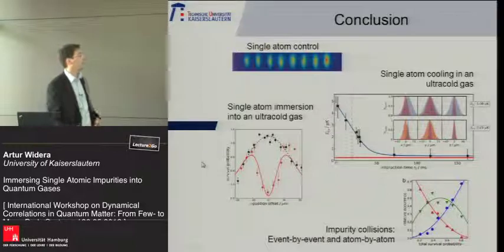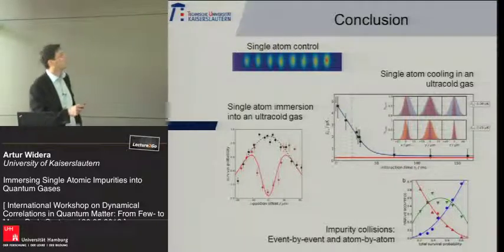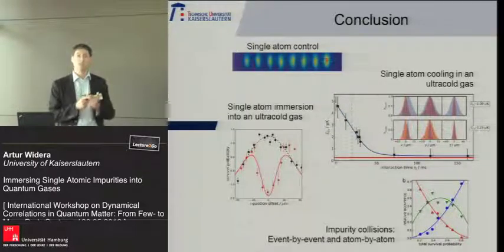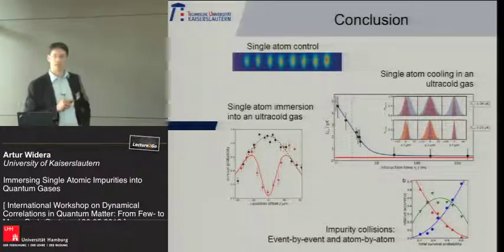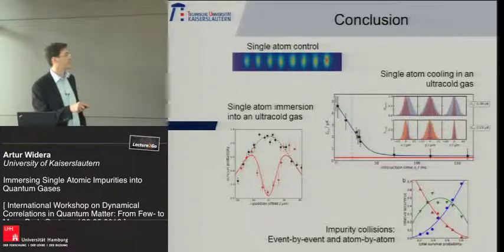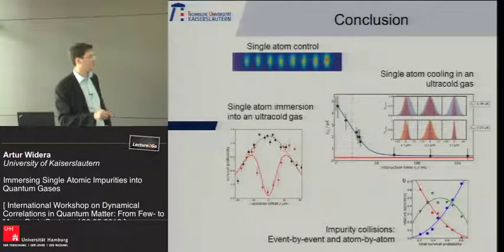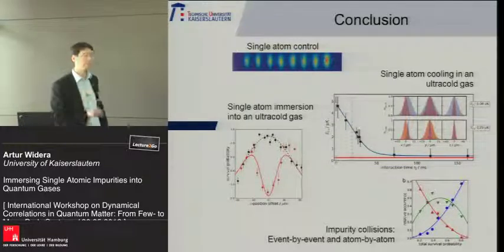In summary, I hope I have convinced you that we have extremely good control over single particles in our optical lattice in terms of position, preparation, and quantum degrees of freedom. We are able to overlap single-atom traps with an ultra-cold gas close to the condensation threshold, and it's no problem to bring the rubidium system to full condensation. We've observed the thermalization of a single impurity in an ultra-cold gas, temperatures coinciding within error bars, and we've studied inelastic three-body recombination event by event and atom by atom, establishing a method to microscopically examine these interactions.